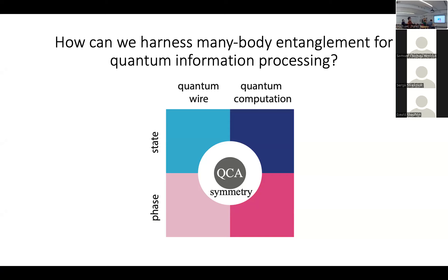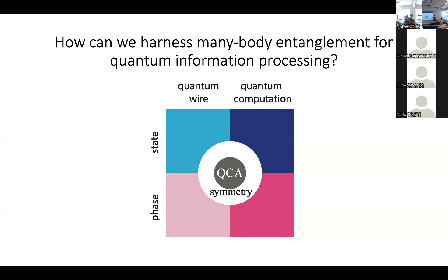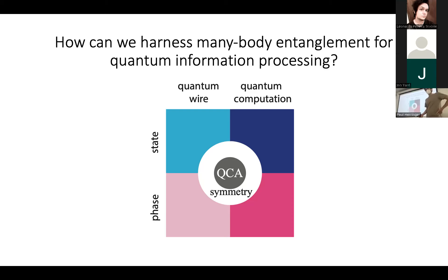I'll start with a figure which is going to be my roadmap to this general area. The question I'm broadly looking into is: how can we harness many-body entanglement for quantum information processing? This is not a question of optimization, since we already know some very useful states like the cluster state. Instead, it's a question about classification — we're looking for insights into quantum computation in the paradigm of measurement-based quantum computation, which lets us attack the problem through resource states.